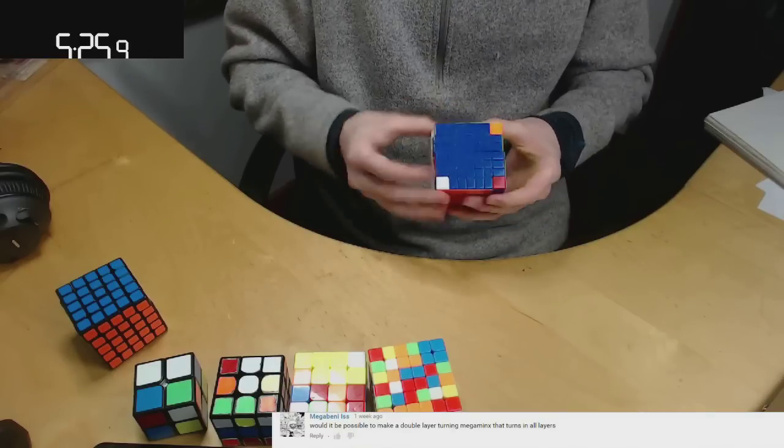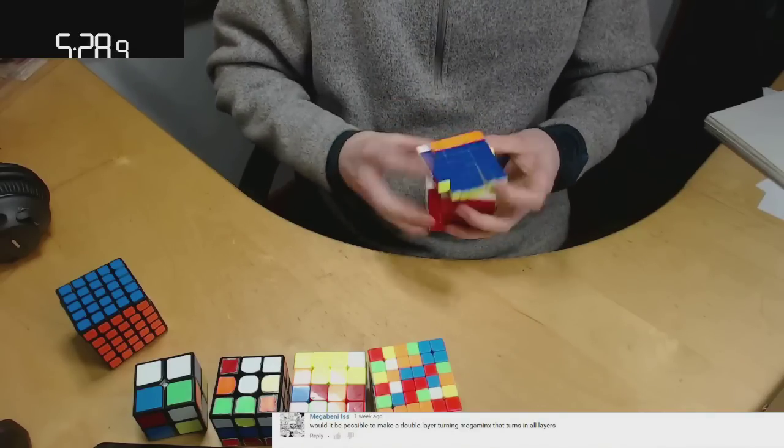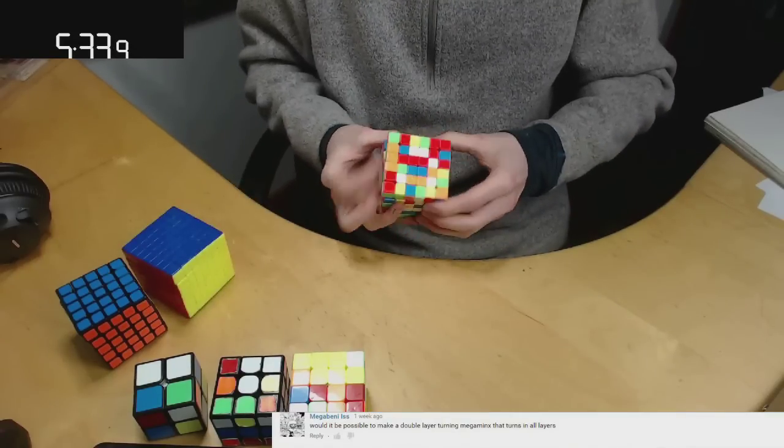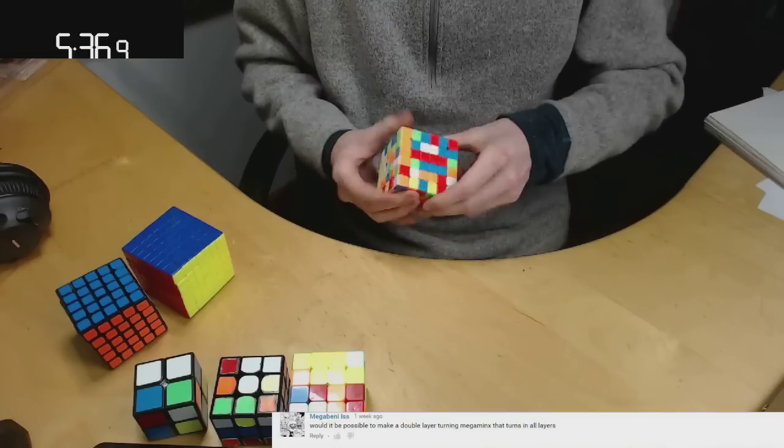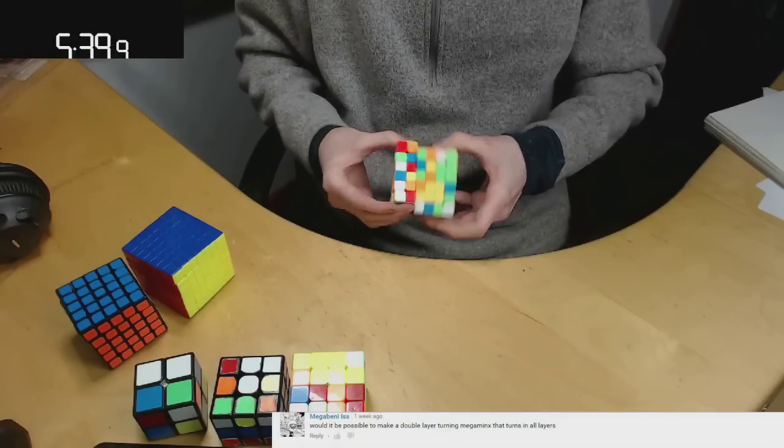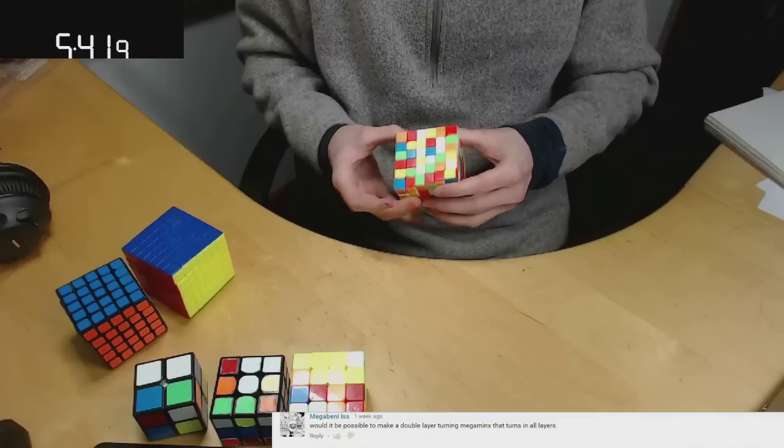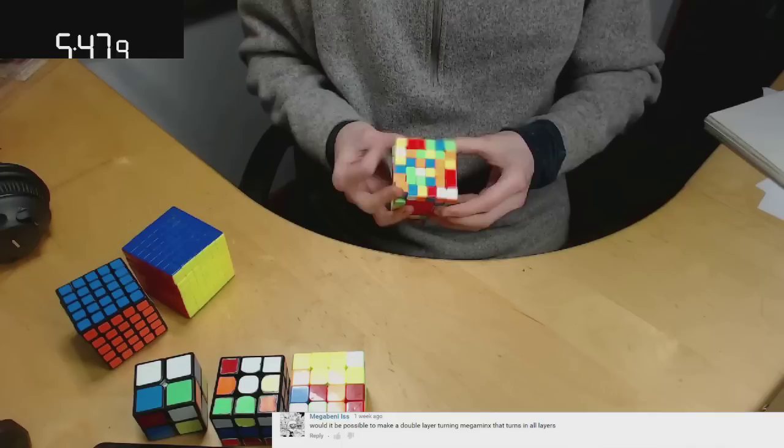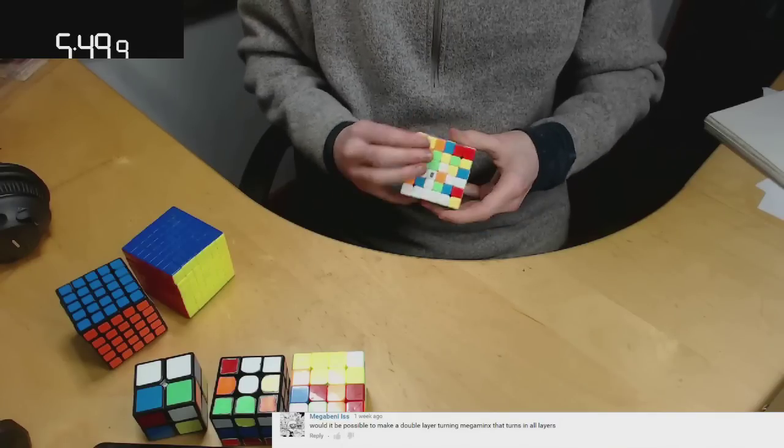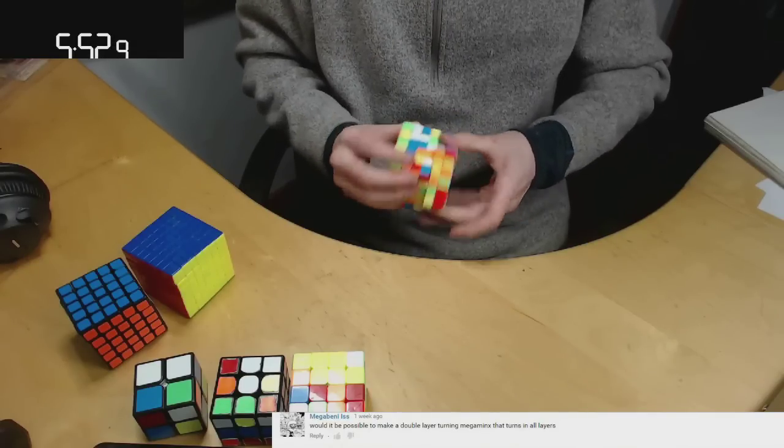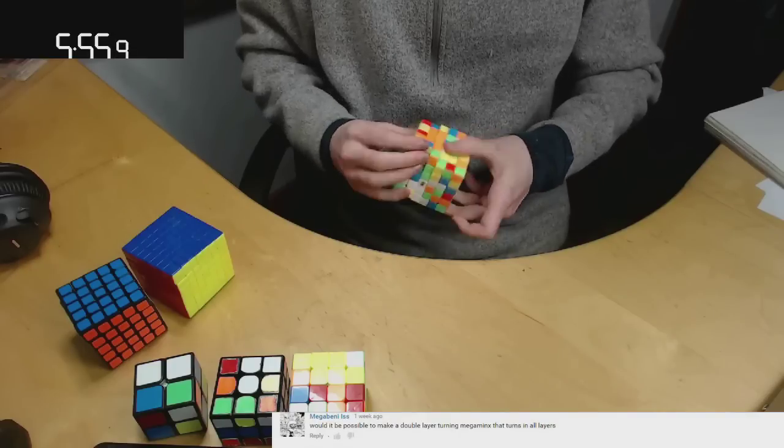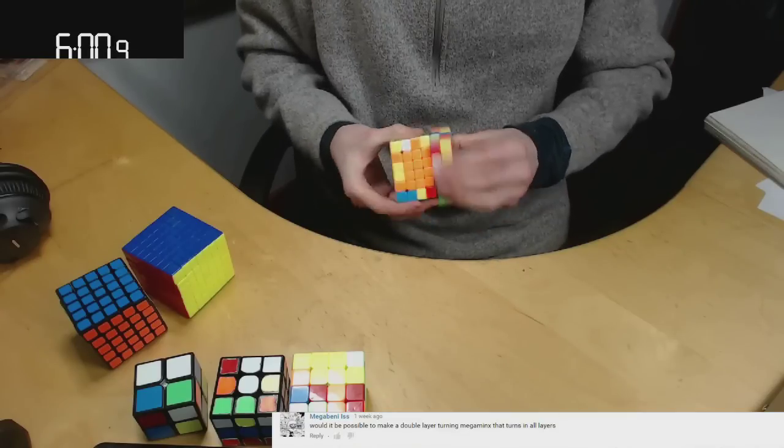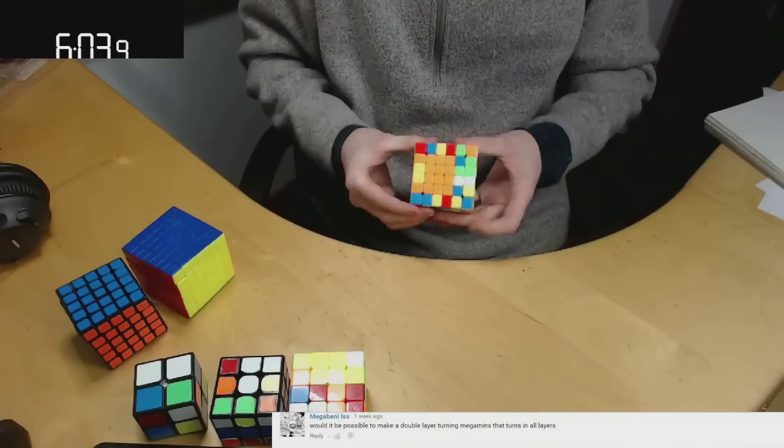Would it be possible to make a double layer turning Megaminx that turns on all layers? I'd assume it's probably possible. I've seen a video on YouTube a long time ago where it did do that, where it was the double turn on all layers. But I don't know if it did the normal turn though. So I'm not sure if it was a double turn or just the one inner layer turn. But that plant puzzle had like a crazy amount of internal pieces too. So I think maybe adding the extra functionality of making it also turn like a normal Megaminx would probably push that one over the edge, so I don't know if it's possible.